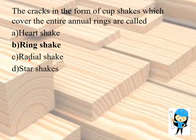Radial shake is similar to star shake but occurs due to exposure to sun when the felled timber is placed for seasoning. To summarize: heart shake starts from the center and extends in the direction of medullary rays; star shake extends from the bark towards the sapwood; radial shake is caused due to seasoning; ring shake is a rupture of tissues in the circular direction across the cross section of the log.